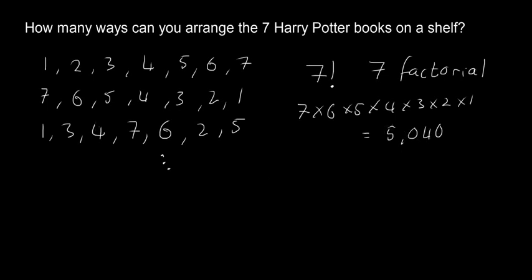Seven factorial is on the calculators. On Sharp calculators it's above the four—you'll see a little exclamation mark. You'll need to press the second function button. On Casio calculators, it's above the x^-1, at the top right of your calculator. Again, you'll need to press the shift function. It looks like x!.